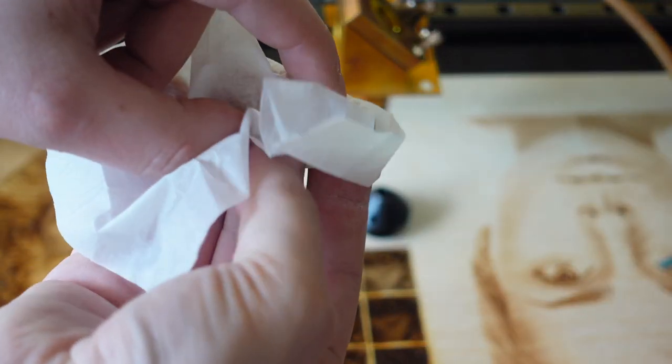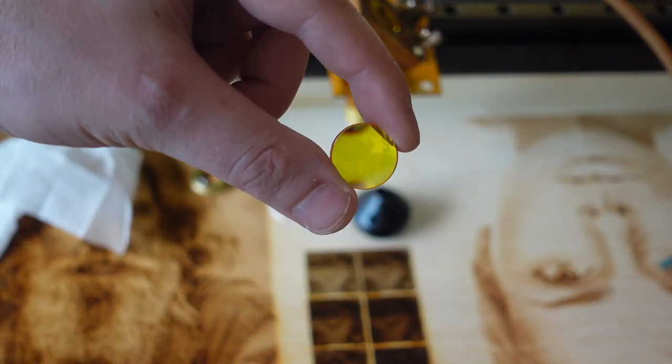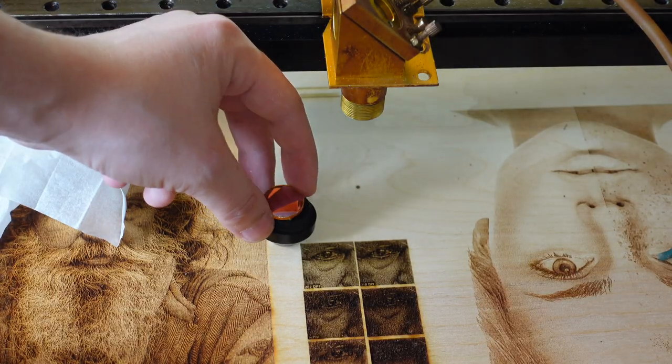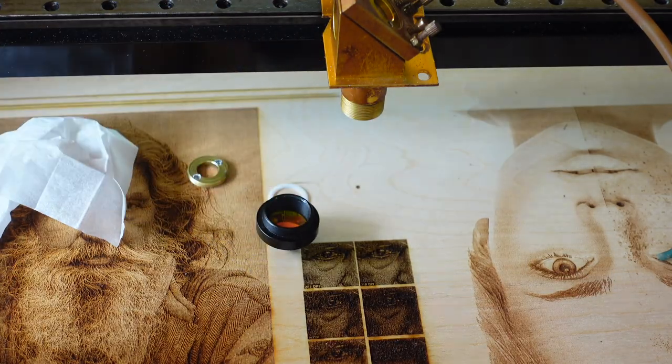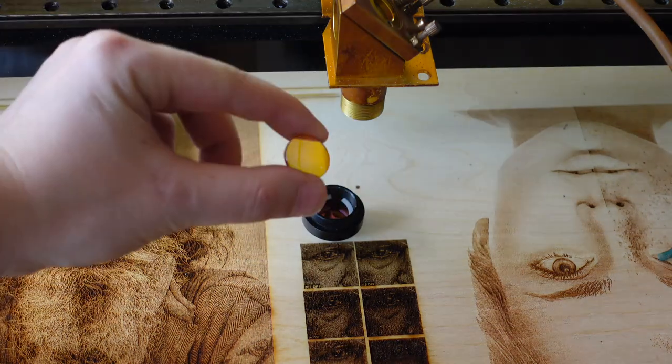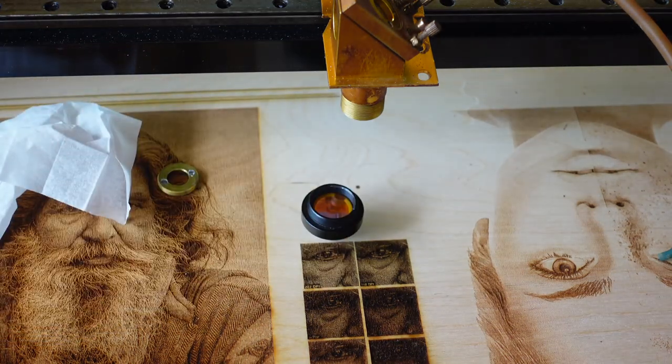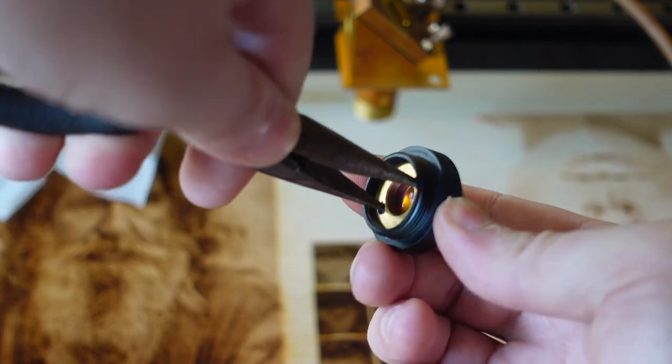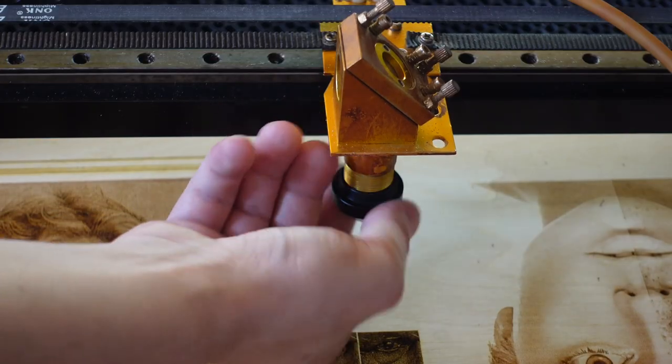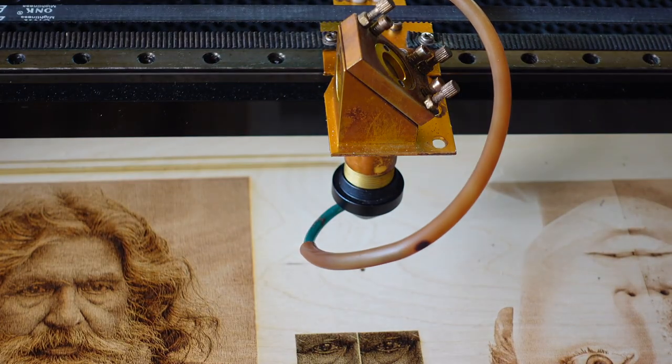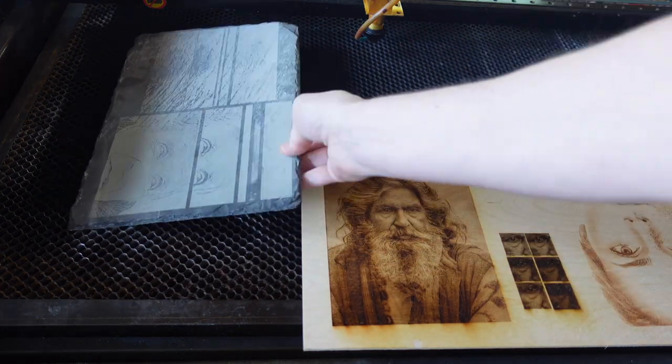Don't be confused why I have two lenses in my nozzle. I use the Cloud Ray compound lens to get a smaller dot size and therefore more details in the engravings. A tutorial about compound lenses is in the top right corner.